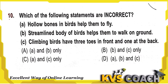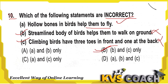Next question: which of the following statements are incorrect? Hollow bones in birds help them to fly — this is correct. Streamlined body of birds helps them to walk on the ground — this is wrong; streamlined body helps them to fly. Climbing birds have three toes in front and one at the back — this is also incorrect. So B and C are both incorrect. Option B is the right answer.